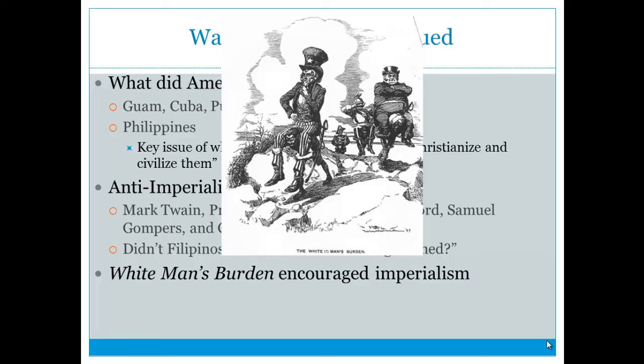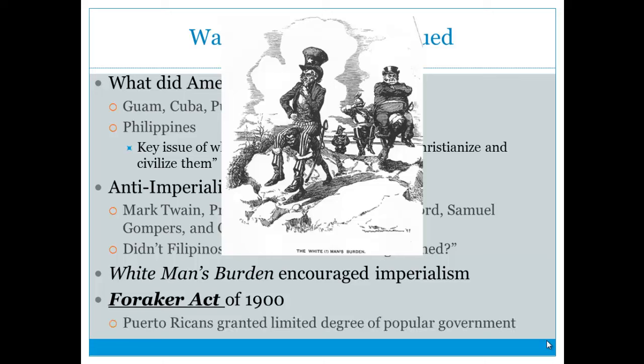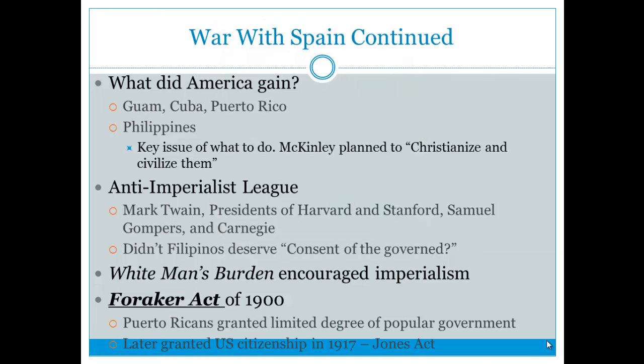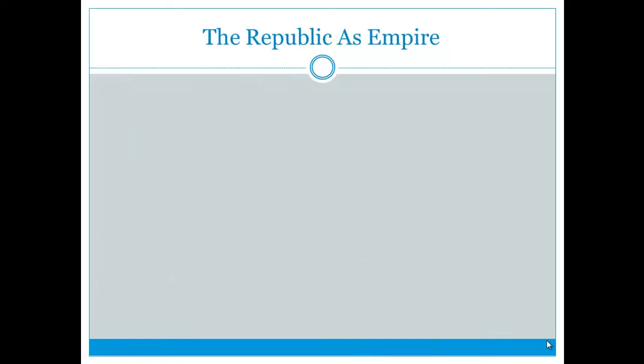Rudyard Kipling's famous poem The White Man's Burden encouraged imperialism and said it was the duty of the United States to civilize non-Western areas. The Foraker Act of 1900 gave Puerto Ricans a limited degree of popular government, and later in 1917 they were granted citizenship under the Jones Act.